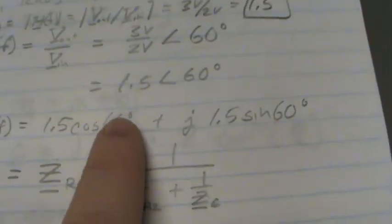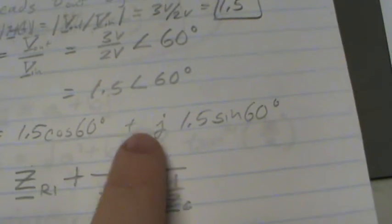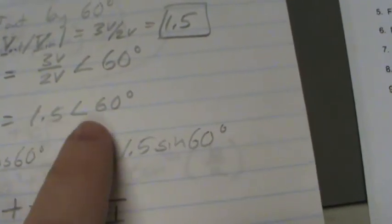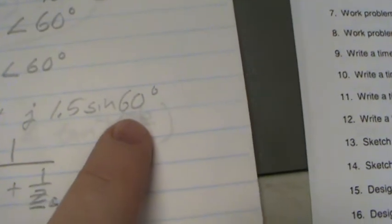To convert that over to complex form in problem 21, you take the magnitude times the cosine of 60 to get the real part, plus j, which is the square root of minus 1, times the magnitude times the sine of 60 to get the imaginary part of this complex expression for the transfer function.